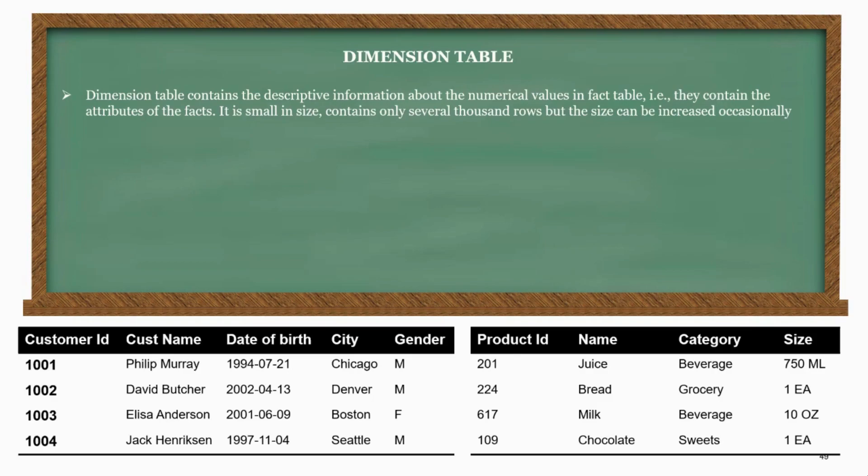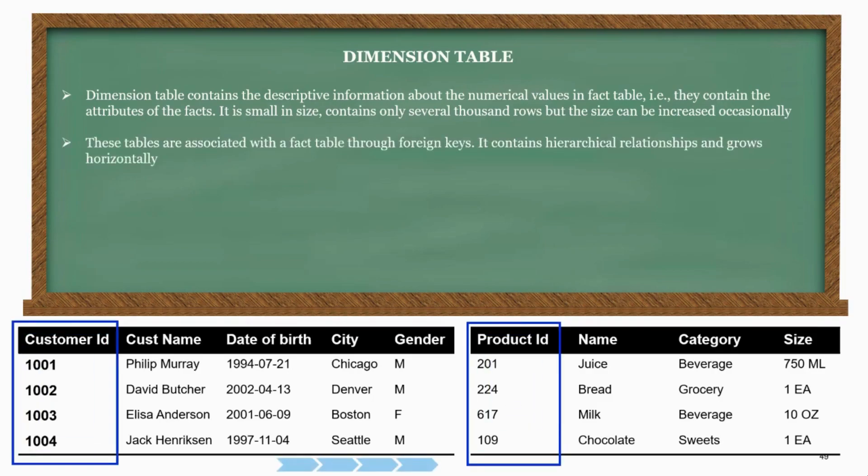These tables are associated with a fact table through foreign keys. It contains hierarchical relationships and grows horizontally.